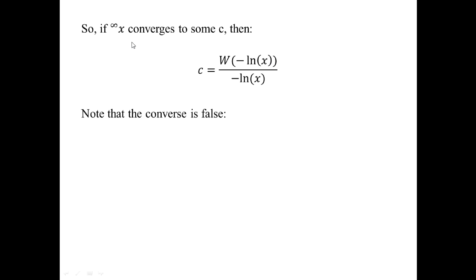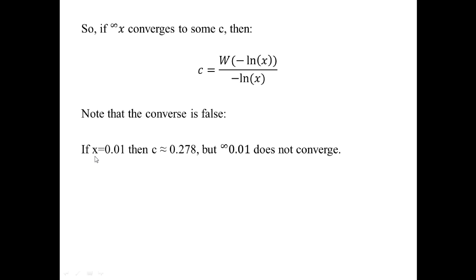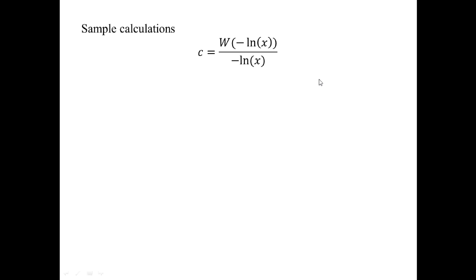It's also important not to confuse this with the converse. The converse — that if this formula gives a value then the base X must converge — is in general false. Here's a counterexample: if X = 0.01, the formula gives a number of about 0.278, but the infinite tetration of 0.01 does not converge — it bounces back and forth between two values, one close to 1 and one close to 0.